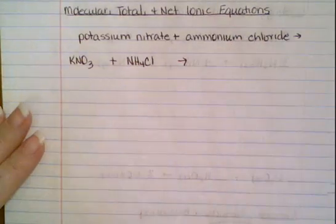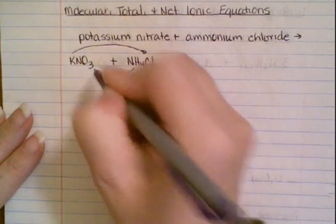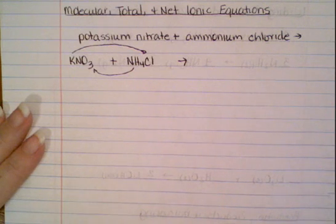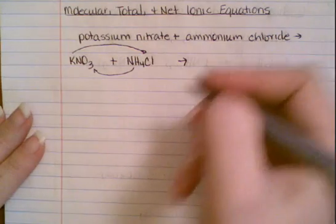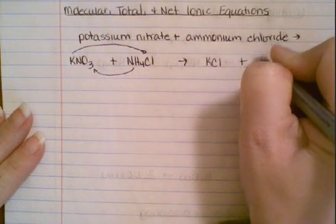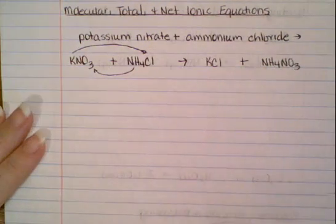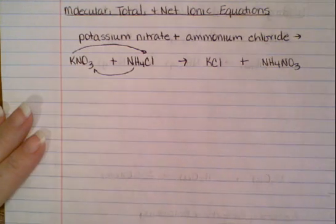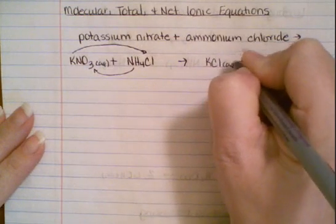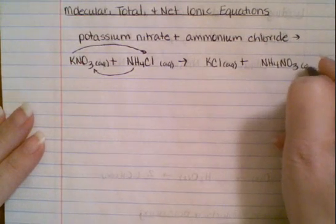Now I need to predict the products. You're going to take your outsides and they're going to hook up, and your insides are going to hook up. Since everything is a +1 and a -1, when we get to the other side we don't need to worry about any subscripts. So this will be KCl and NH₄NO₃. I need to find out the solubility of these — all Group 1A are soluble, so they get AQ. NH₄ also falls into that group, so it gets AQ as well.